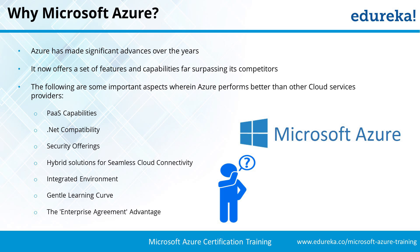Everything on the internet — websites — is IIS-based, and IIS is a Microsoft product. So when you talk about PaaS services, the example is app services, which basically delivers the same capability as an IIS server. When someone using a Microsoft product wants to move to a cloud solution, they'll naturally go with a Microsoft product. PaaS capabilities are great, and .NET compatibility is great because .NET is a Microsoft thing.